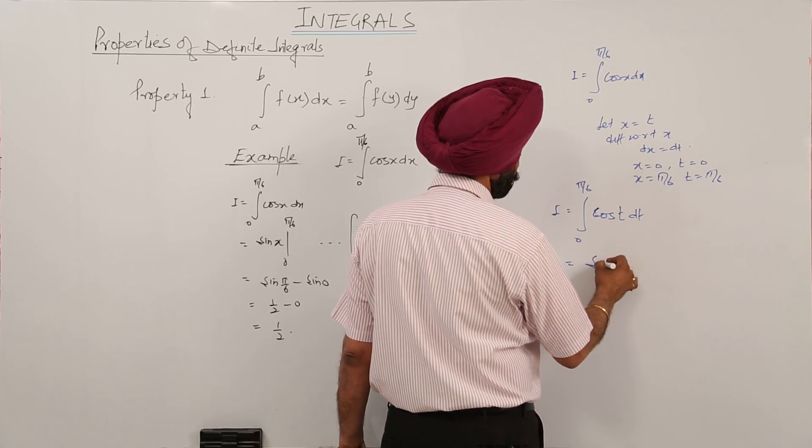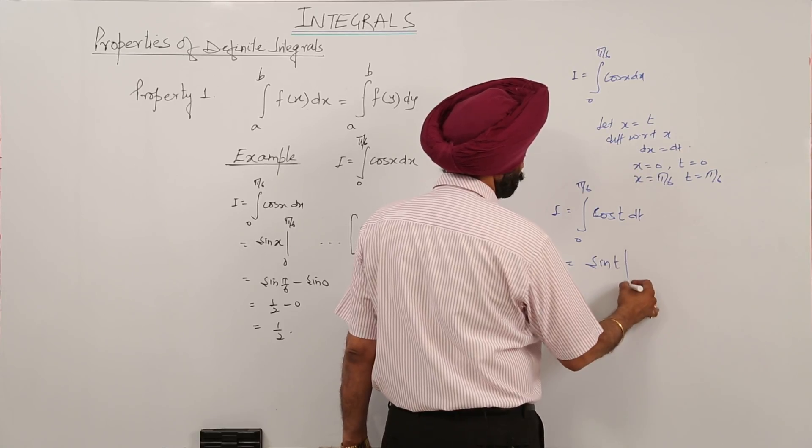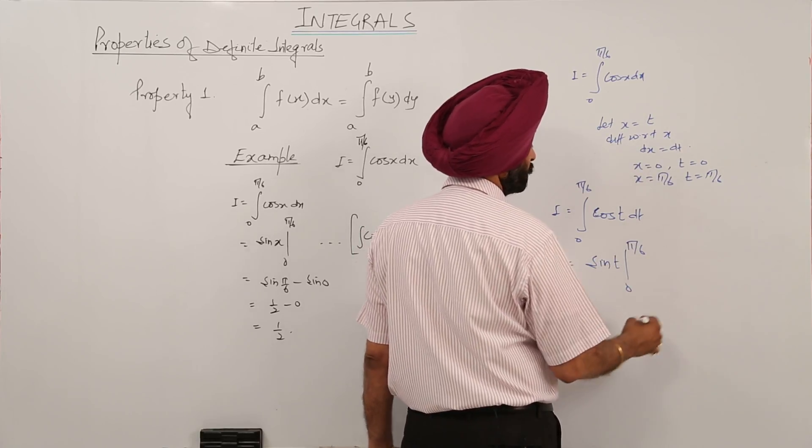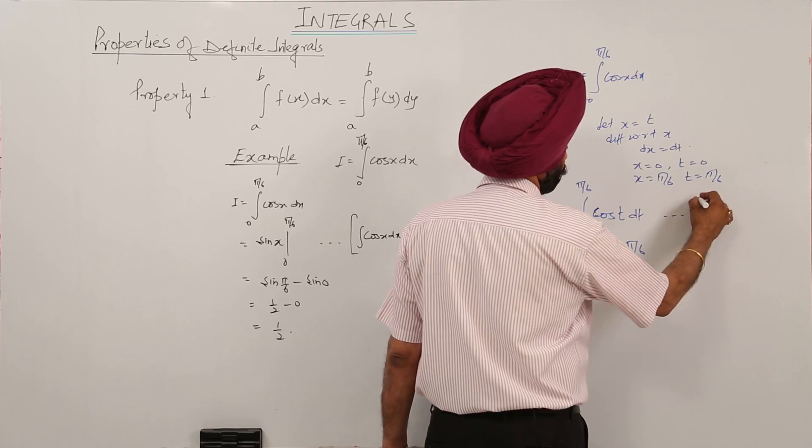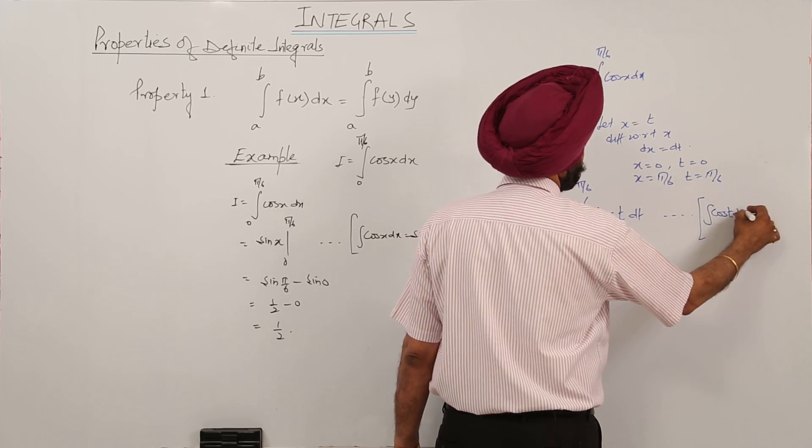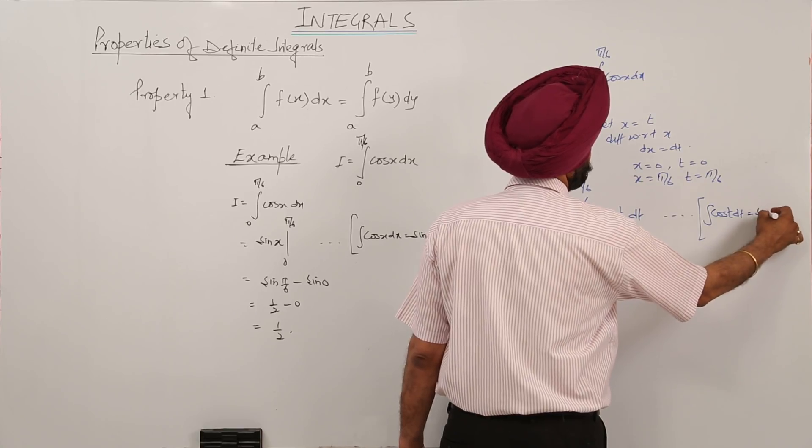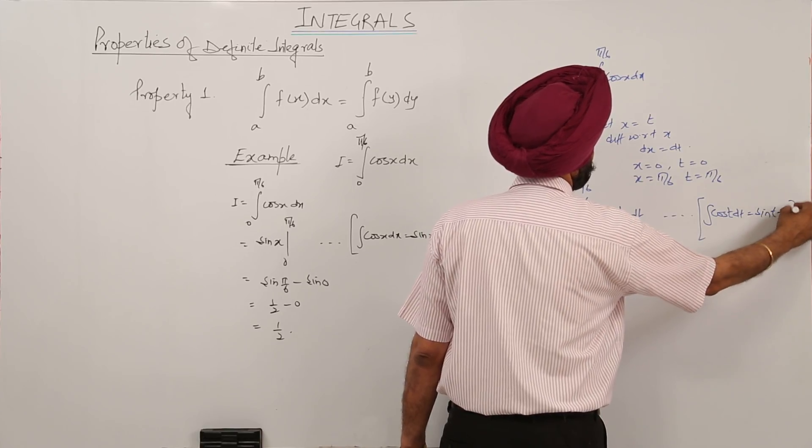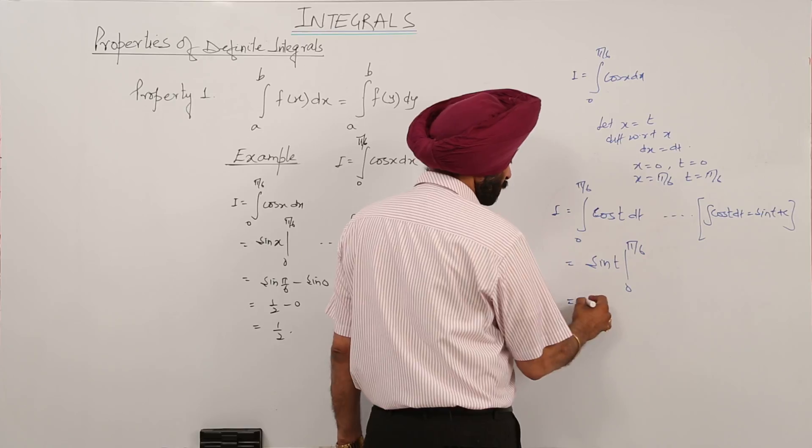Now this is equal to sin t 0 to pi by 6. Integration of cos t dt is equal to sin t plus c. Now what the answer is?